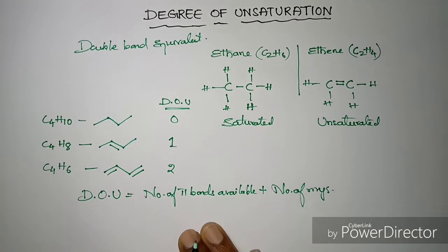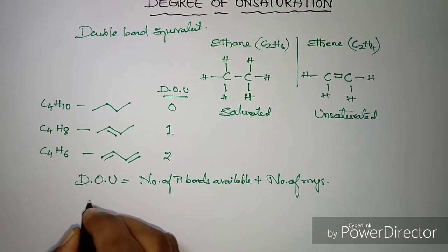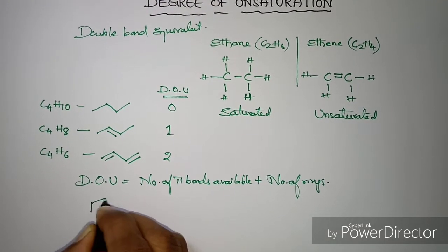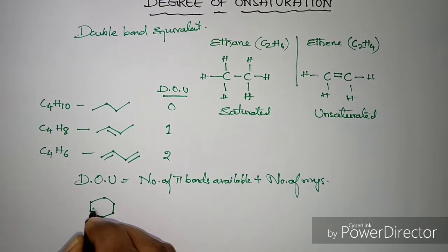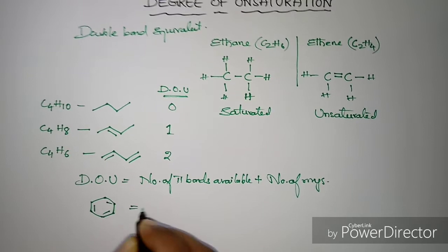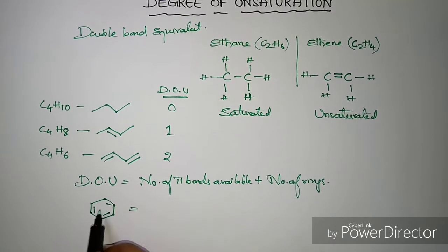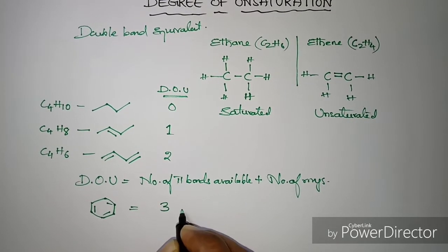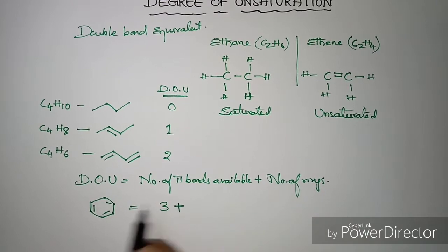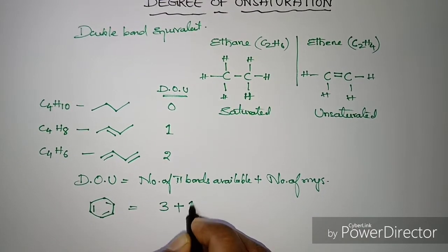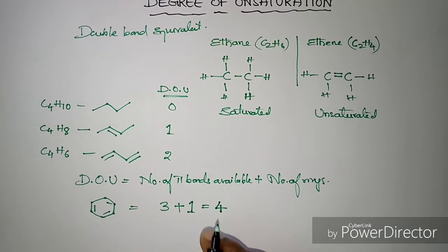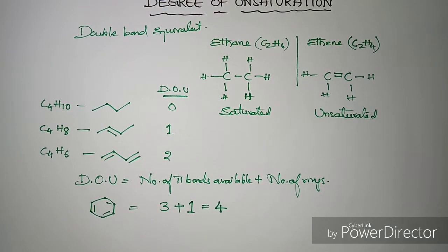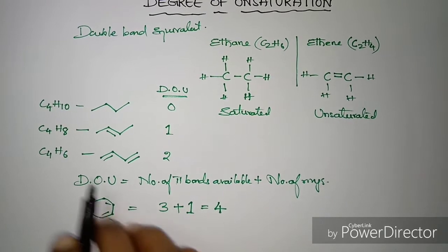In benzene, how many pi bonds are available? There are three pi bonds available. And how many individual rings are available? One. So total it will be equal to four. So the degree of unsaturation for benzene is four.